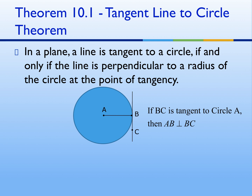We're just putting this into a theorem — the tangent line to circle theorem. It says: in a plane, a line is tangent to a circle if and only if it is perpendicular to a radius of the circle at the point of tangency. Basically, any tangent line is going to be perpendicular to the radius. It is an if and only if statement, meaning it works both ways: if you know it's perpendicular, it has to be a tangent; if you know it's a radius and tangent line, then you know it must be perpendicular.